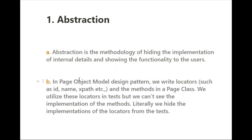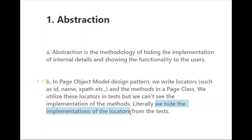In terms of how we use abstraction in the Page Object Model design pattern: we write locators and methods in different page classes and use them in test methods in other classes. This means you cannot see the implementation of the methods from the test class — we are hiding the implementation of the locators from the tests. You are not aware of the implementation when looking at the test class.